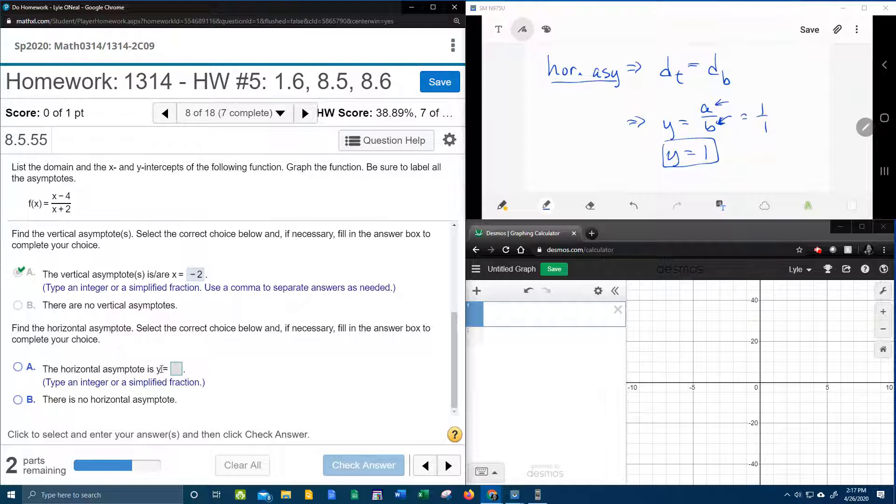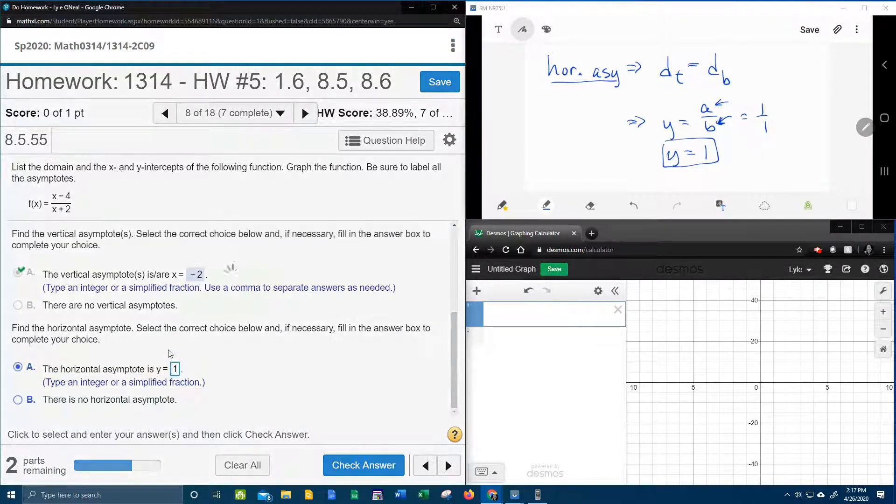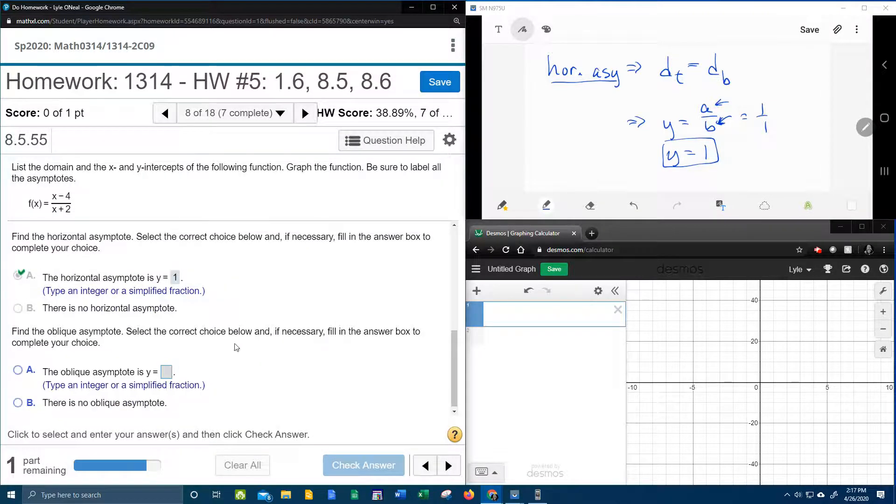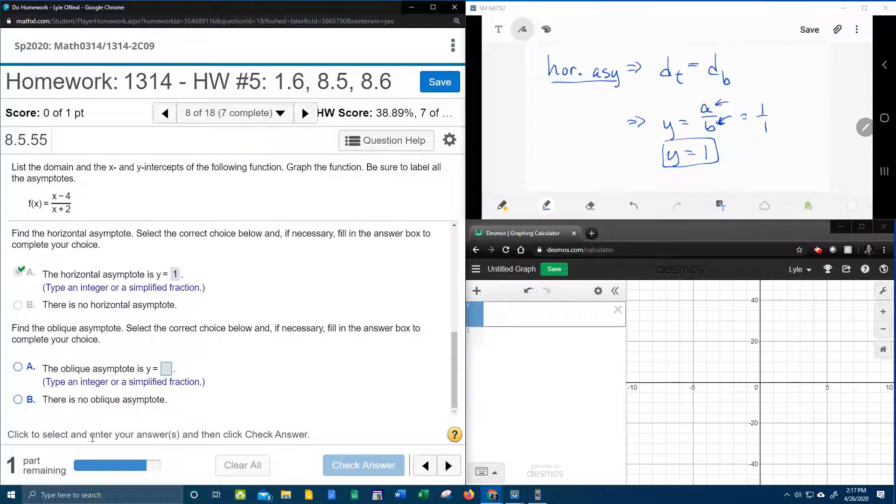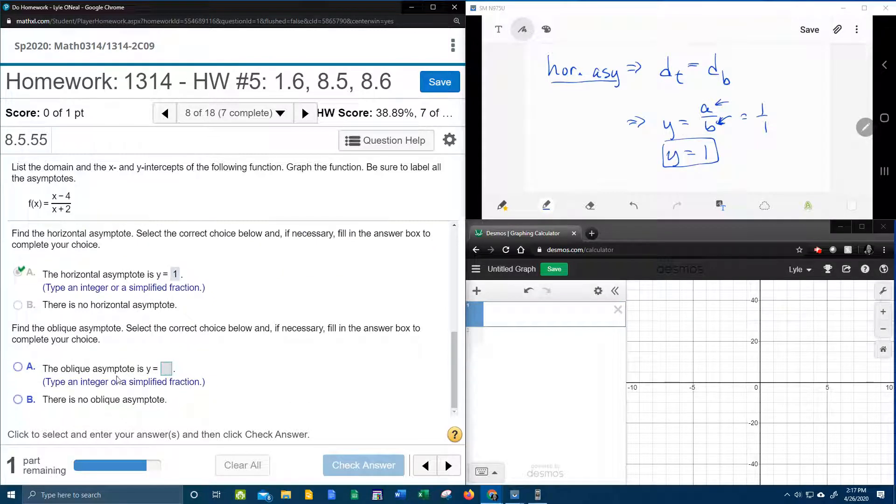So our horizontal asymptote should be y equals 1. That's a lot of work for that guy. Y equals 1. And I didn't lie to you. Yay. Alright. So then it says click to select and enter your answer. Where is the next part of the answer? Here. Click to select. Did I miss something? Oh, I'm sorry. Oblique.